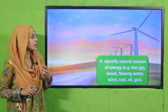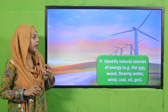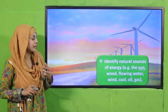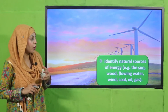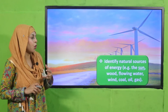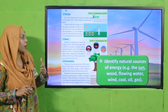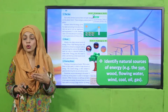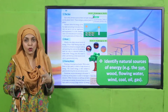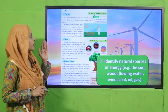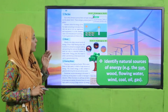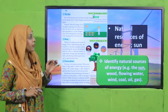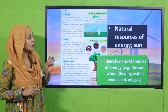Next, we identified natural sources of energy like sun, wood, flowing water, coal, oil, and gas. We discussed each one individually — the different natural energy sources, including sun, wood, and flowing water.